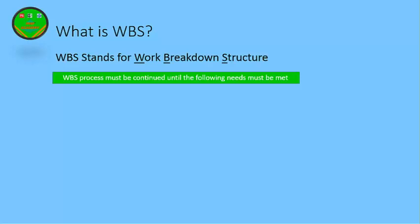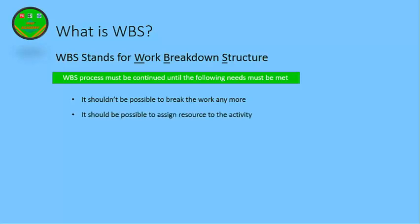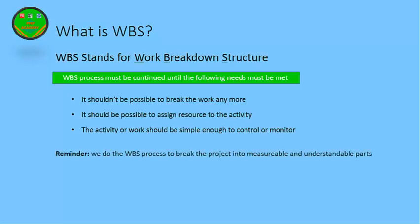The WBS process must be continued until the following needs are met. The first need is that it shouldn't be possible to break the work down anymore. The second one is that it should be possible to assign resources to the activity or activities. The activity or work should be simple enough to control or monitor.